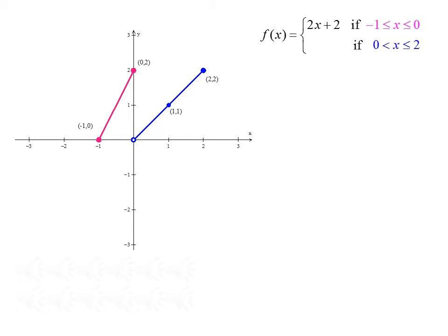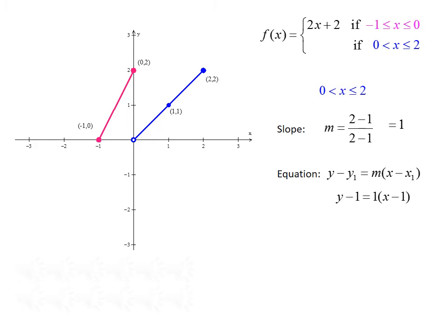For the blue line, the two identified points are 2, 2 and 1, 1. The slope equals 2 minus 1 over 2 minus 1, giving a slope of 1. Using point-slope form with the point 1, 1: y minus 1 equals 1 times x minus 1, which simplifies to y equals x. So the second formula for our piecewise function is f of x equals x when 0 is less than x is less than or equal to 2.